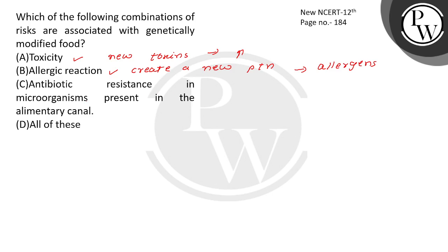So you can see, antibiotic resistance in microorganisms present in the alimentary canal - this is also correct. Now you can see, many times genetically modified organisms are engineered using antibiotic resistance genes. What does it do?